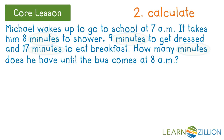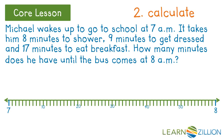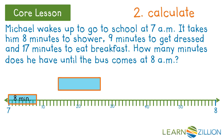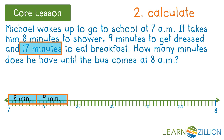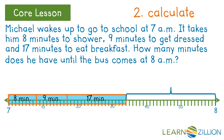We are going to use a timeline to calculate the answer. Notice the timeline begins at 7 a.m. when Michael woke up and ends at 8 a.m. when he gets on the bus — there are 60 minutes in between. We need to plot each activity on the timeline: he spends eight minutes showering, nine minutes getting dressed, and seventeen minutes eating breakfast. The remaining area tells us how many minutes he had left. The answer to the question is 26 minutes.